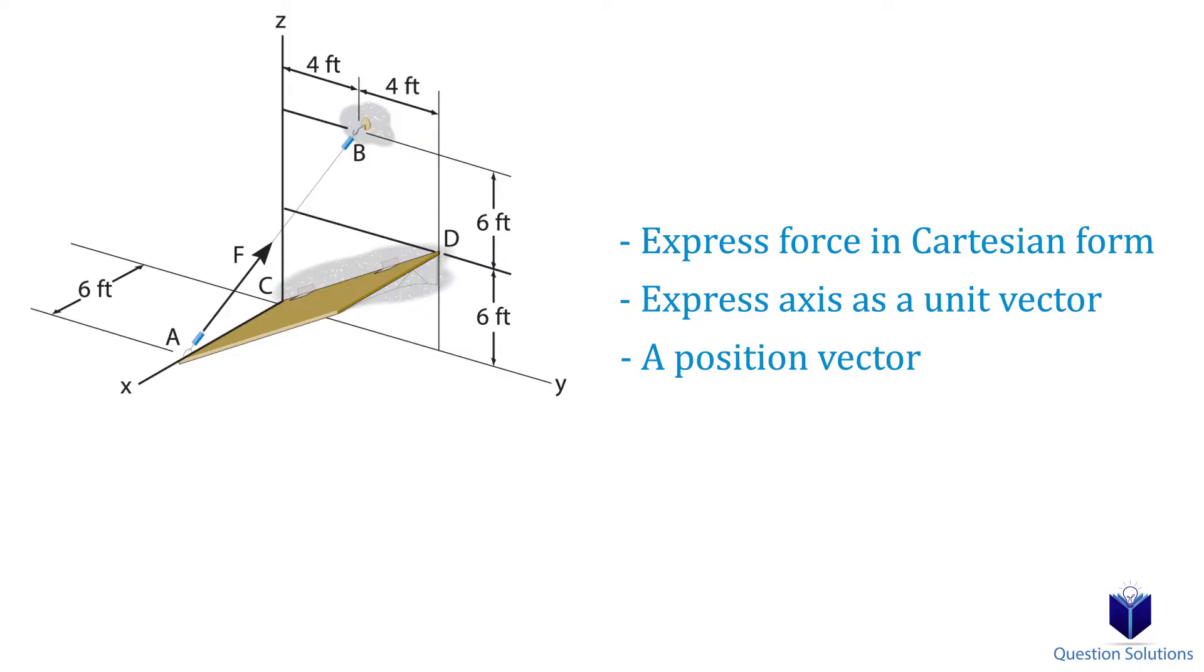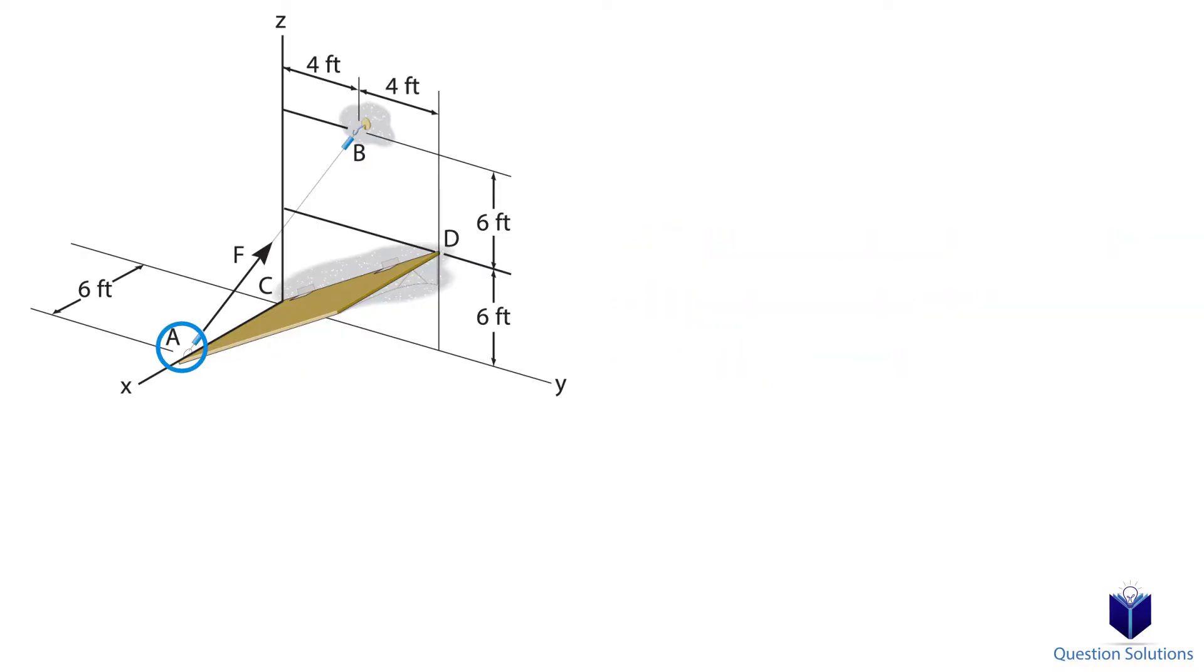Once we have these three things, we just need to do a triple scalar product. Let's go through this step by step. Let's write down the locations of each point in Cartesian form. First, point A. Next, point B. Now point C, which is also our origin, and lastly point D.